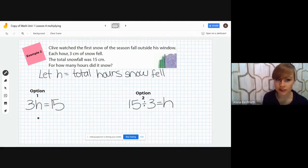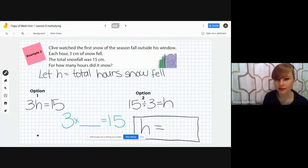What that looks like is, our thinking stays the same: 3 times what equals 15. If you know your multiplication facts, or if you can just skip count by 3's, you know that the answer is 5. So, that means that H equals 5. It took 5 hours for the snow to fall.